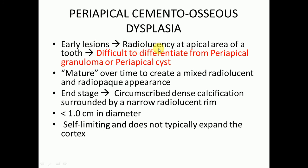Early lesions of periapical cemento-osseous dysplasia are radiolucent areas present at the apical area of the tooth, making it difficult to differentiate from a periapical granuloma or periapical cyst. With passage of time they mature into a mixed radiolucent and radiopaque appearance. At the end stage there will be circumscribed dense calcification surrounded by a narrow radiolucent rim. Most lesions are less than one centimeter in diameter, self-limiting, and do not typically expand the cortex.